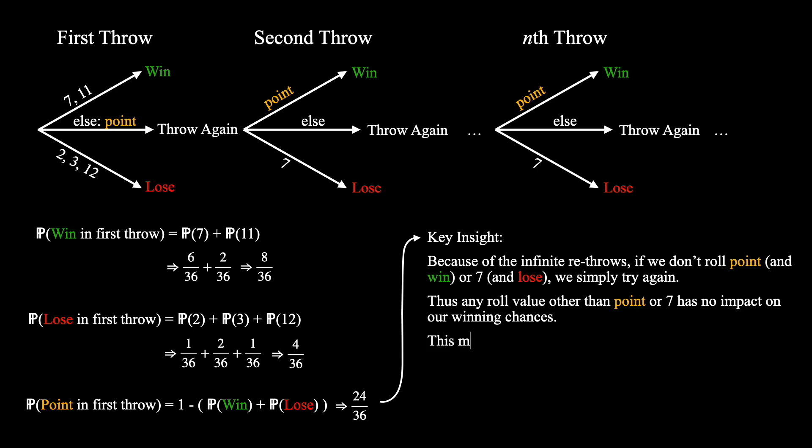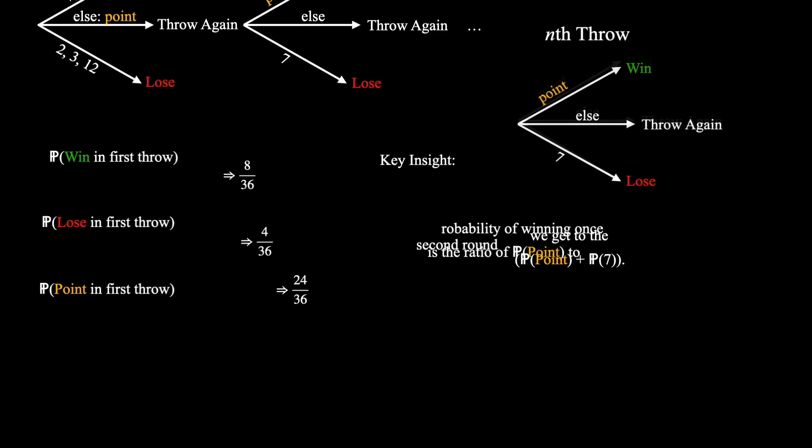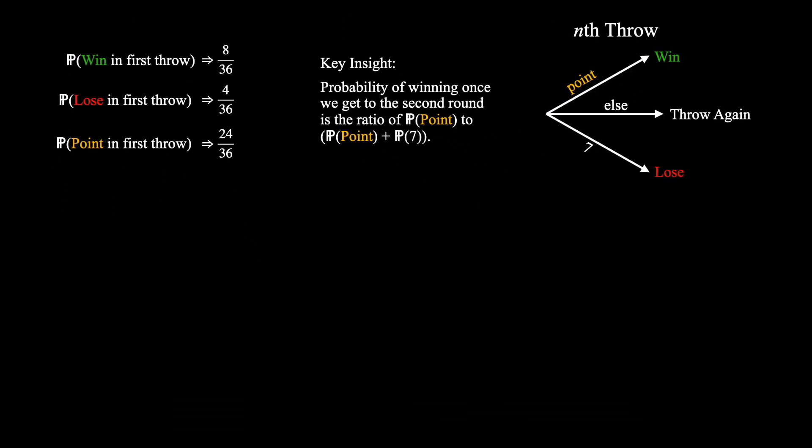This means that the probability of winning once we get to the second round is simply the ratio of the probability of rolling our point to the probability of rolling a point plus the probability of 7. Take a moment to pause and ponder why this fact may be true. Alright, so we've got a lot of information now. Let's try to declutter our workspace a little bit and keep only what we need for the next part.